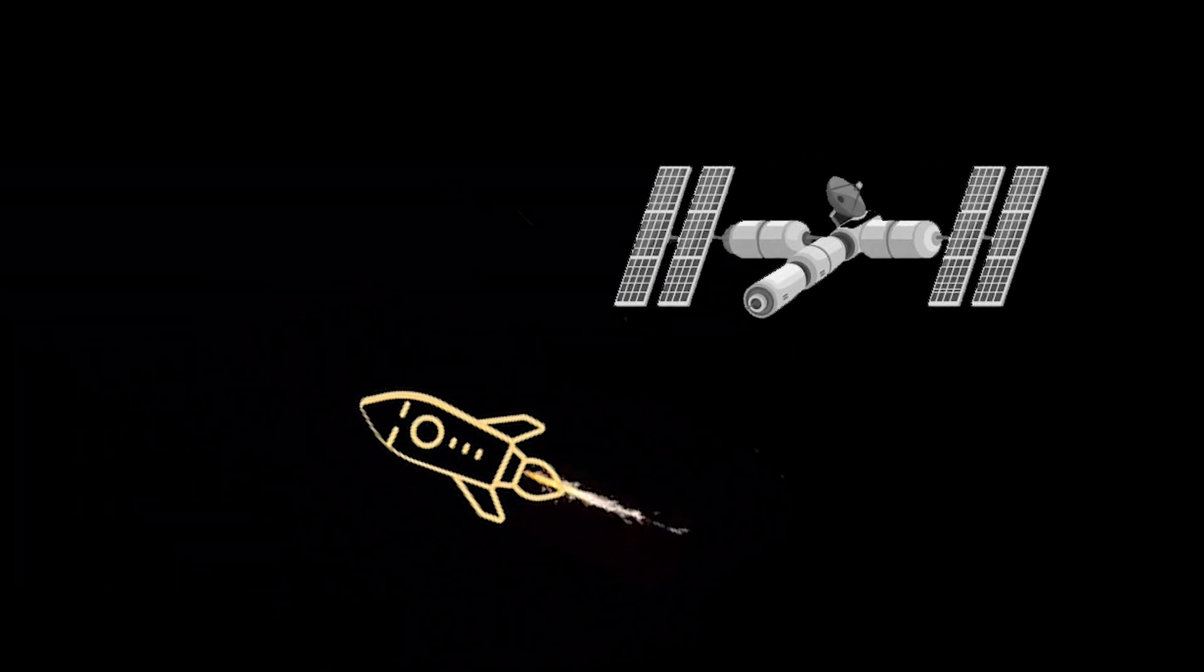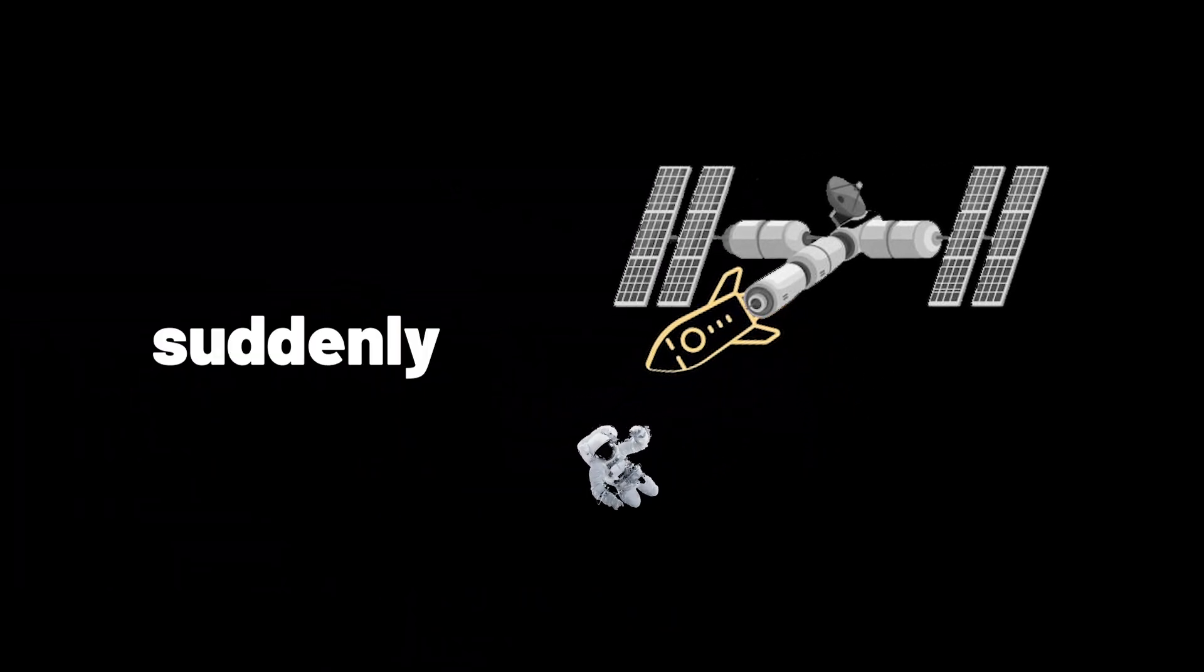Imagine you're an astronaut. You launch with a rocket and off you go to the International Space Station. Then you land on it and suddenly you float. But why?